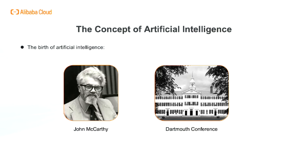The concept of artificial intelligence was born in 1956 by John McCarthy and several other researchers at the Dartmouth Conference. The proposal of the meeting stated: 'We propose that a two-month, ten-man study of artificial intelligence be carried out during the summer of 1956 at Dartmouth College in Hanover, New Hampshire. The study is to proceed on the basis of the conjecture that every aspect of learning or any other feature of intelligence can in principle be so precisely described that a machine can be made to simulate it. An attempt will be made to find how to make machines use language, form abstractions and concepts, solve kinds of problems now reserved for humans, and improve themselves. We think that a significant advance can be made in one or more of these problems if a carefully selected group of scientists work on it together for a summer.'